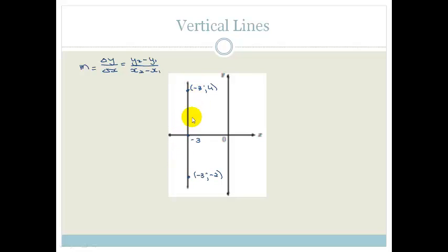So if I had to substitute in these two points into that, do you agree? If we call this y2, we've got 4 minus -2 over -3 minus -3. 4 minus -2 becomes 6 over -3 plus 3, which is 6 divided by 0, which is undefined.